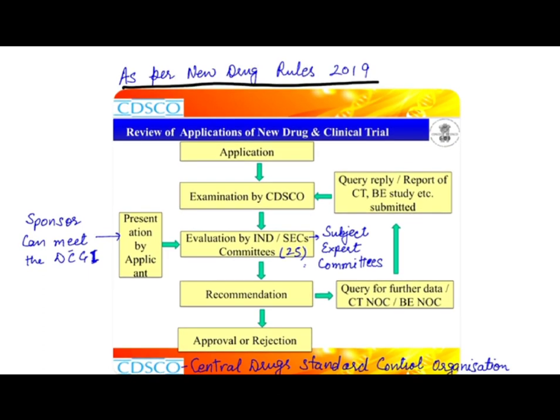Hello everyone, let's discuss how new drugs are approved in India. This can be a new drug, new treatment, or device. The process you can see on your screen is as per the New Drug Rules 2019, which were issued in 2019. Students are still confused and say 'as per Schedule Y' — but Schedule Y is now obsolete. It has been replaced by the New Drug Rules 2019.